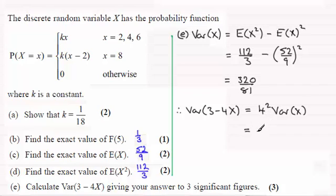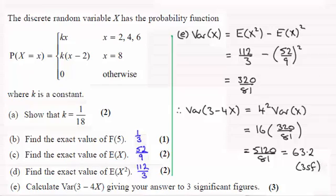So 4 squared is 16. We've just worked out the variance of X, which was 320 over 81. Working this out gives us 5,120 divided by 81. That's the exact answer, but to three significant figures, this turns out to be 63.2, or 3SF for short.